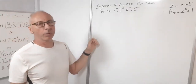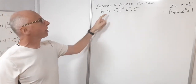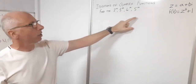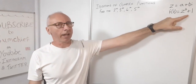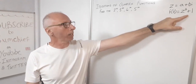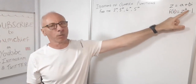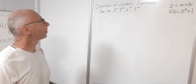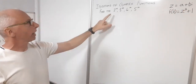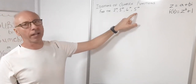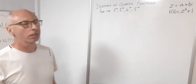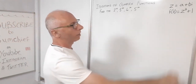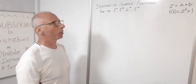We've got a question here — we need to find iterations of complex functions. The function we're going to iterate is f(z) = z² + 1, where z = a + bi, following normal complex analysis rules. We've been asked to find the second, third, fourth, and fifth iterations. The first iteration is simply f(z) = z² + 1.